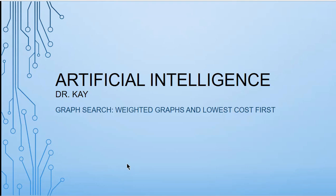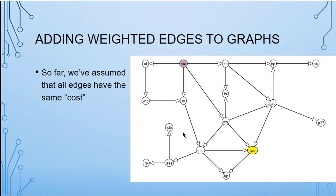So far, when we've been looking at our graph search algorithms, we've only talked about graphs that are unweighted graphs. Now we're going to talk about weighted graphs. As I said, so far we've assumed that all edges have the same cost.